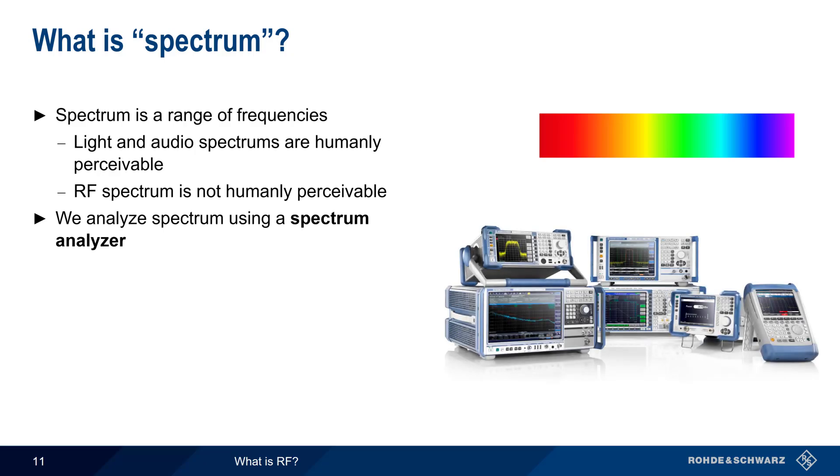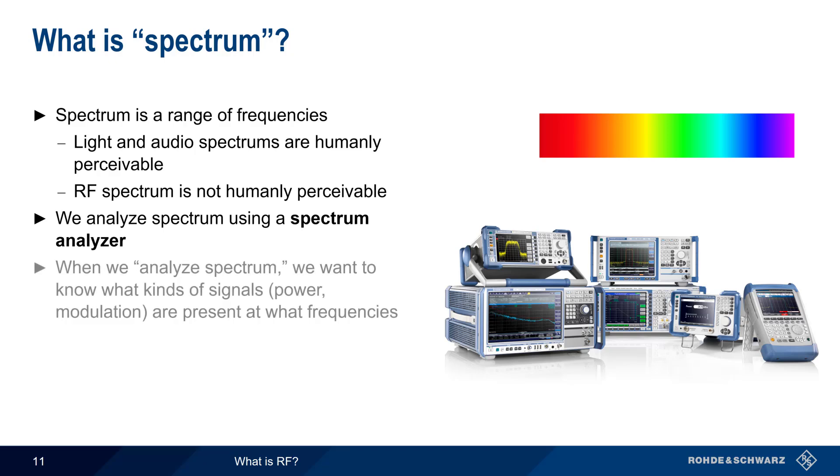We normally can't sense RF at all, and we certainly can't distinguish how much energy is present at different frequencies. Instead, we use a special instrument called a spectrum analyzer to obtain this information. When we use this instrument to analyze spectrum, we typically want to detect and measure what kinds of signals are present and at which frequencies, their powers, any modulation, etc. In most cases, spectrum analyzers are used in a laboratory environment, but there are also portable spectrum analyzers that are specifically designed to be used outside or in the field.